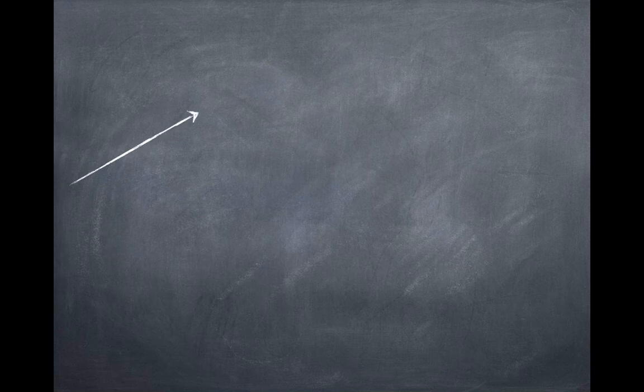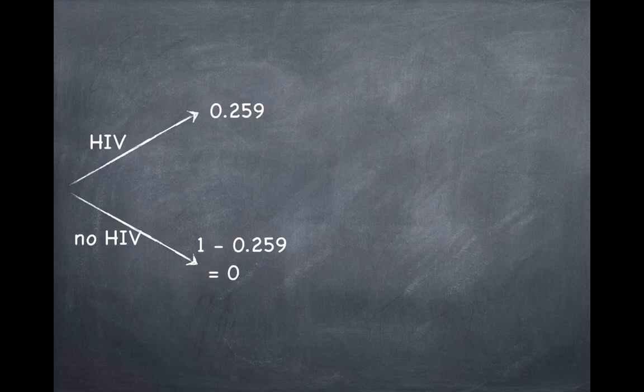The first branch is always the marginal probabilities. If I pick a random person from Swaziland, they might be an HIV carrier or they might not be an HIV carrier. The probability that they're an HIV carrier is 0.259, and the probability that they're not is the complement of that, 0.741.